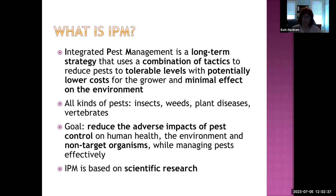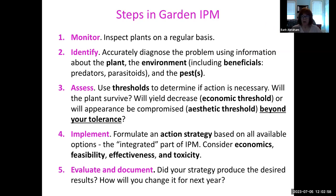When you're thinking of the environment, you also have to think of non-target organisms, which could include pollinators, birds or other wildlife, pets or children. IPM is based on research. These are the steps according to Barb Abraham: you obviously need to keep up with your garden, inspect your plants on a regular basis, know what your plants are, what your environment is like in terms of shade and soil, and you also have to know what the beneficials in your gardens are — and that's the purpose of today.